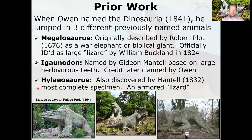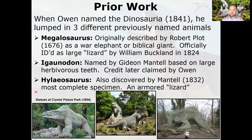The last of the three is Hylaeosaurus, also discovered by Gideon Mantell in 1832 — about a decade before the naming of the Dinosauria. This was the most complete specimen at the time, a nearly complete skeleton rather than just a tooth or fragment, giving a real idea of how the animal was put together. It was envisioned as a tank-like armored lizard with spines on its back — it turns out those are actually side spines, similar to an ankylosaur.